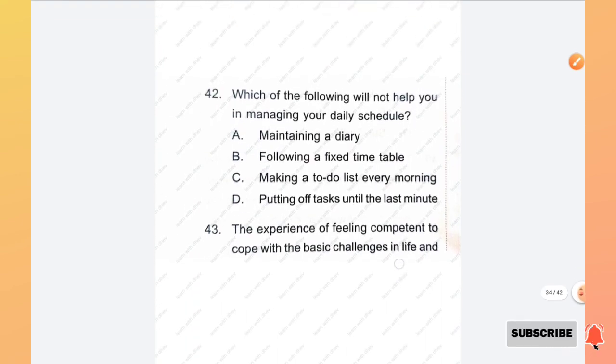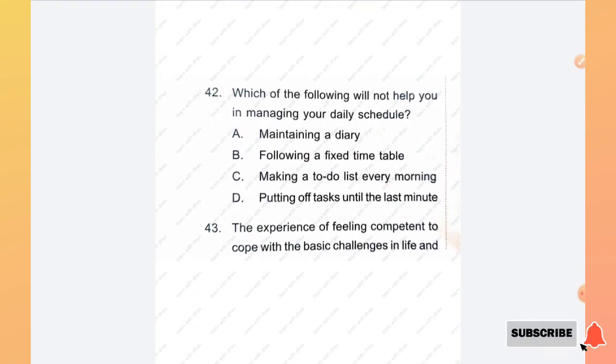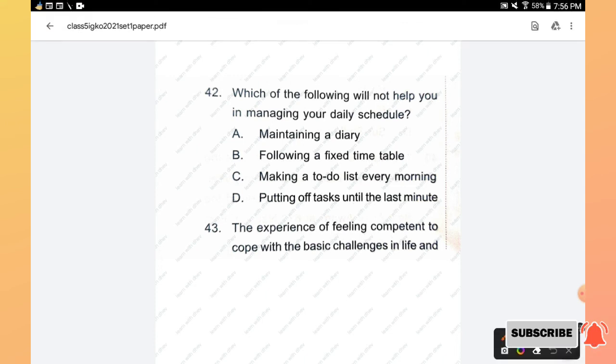Question number 42: Which of the following will not help you in managing your daily schedule? Options are maintaining a diary, following a fixed timetable, making a to-do list every morning, putting off tasks until the last minute. The right answer is option D.